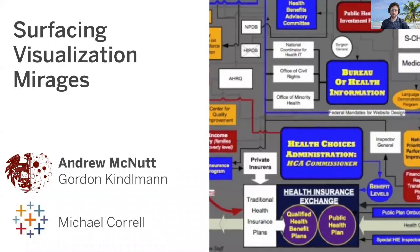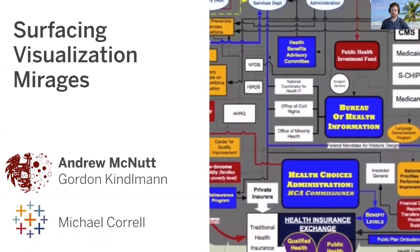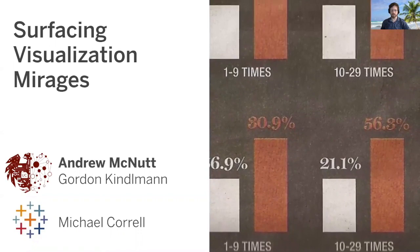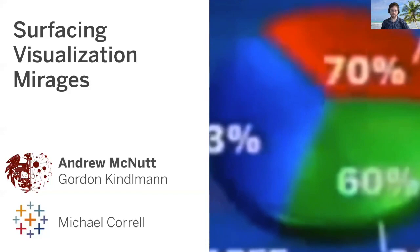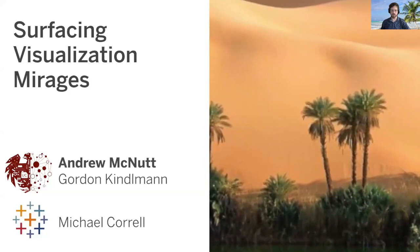Hello, my name is Andrew McNutt and I'm a PhD student at the University of Chicago. When reading a visualization, is what we see really what we get? There are a lot of ways that visualizations can mislead us, to appear to show us something interesting that disappears upon closer inspection. Today I'm going to be talking about our paper, Surfacing Visualization Mirages, in which we introduce the notion of a visualization mirage, describe the troubles they can cause, and provide a technique based on metamorphic testing to dispel a particularly quarrelsome class of mirages.